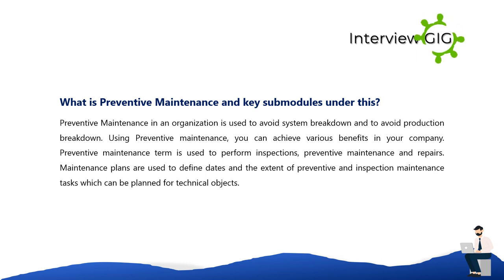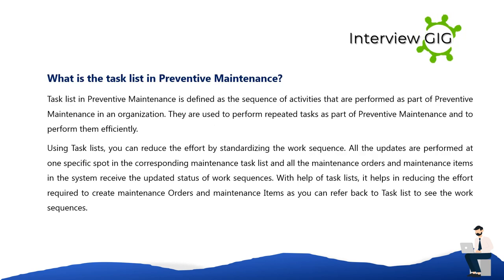What is the task list in preventive maintenance? A task list in preventive maintenance is defined as the sequence of activities performed as part of preventive maintenance in an organization. They are used to perform repeated tasks efficiently. Using task lists, you can reduce effort by standardizing the work sequence. All updates are performed at one specific spot in the corresponding maintenance task list, and all maintenance orders and maintenance items in the system receive the updated status of work sequences.